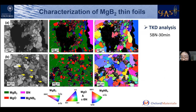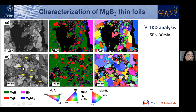TKD analysis on the thin foils detected some MgMB9 grains successfully. However, black regions could not be indexed — we suppose this is because of nitrogen fluctuations inside these regions, or the grains inside are too small to be characterized even in TKD analysis.